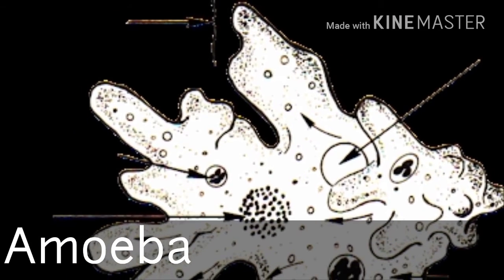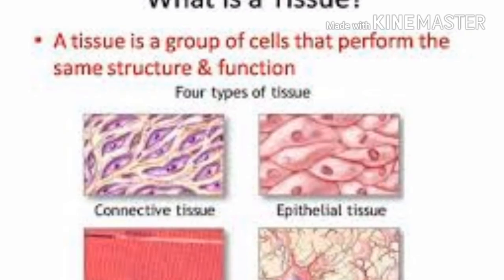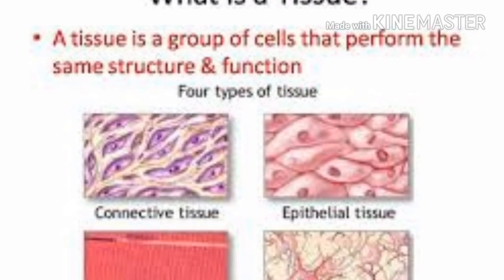Some organisms are made up of a single cell throughout their life — they're called unicellular organisms. An example of a unicellular organism is the amoeba. Multicellular organisms, like humans and other higher animals, are made up of millions of cells within the body.